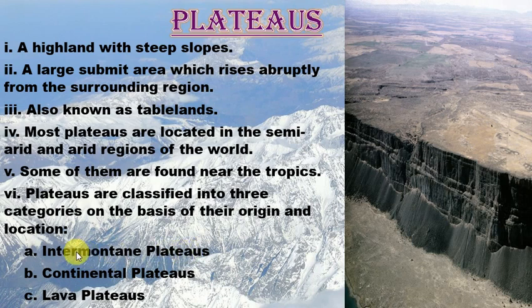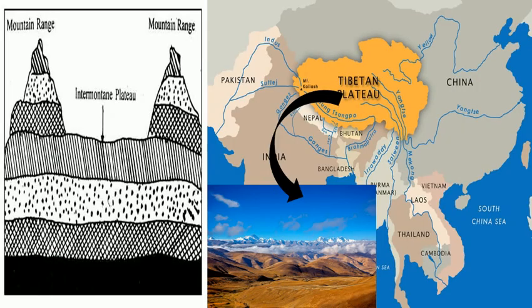Moving on to intermountain plateaus — as you can see in the slide, intermountain plateaus are the highest, largest, and the most complex in the world. They are partly or completely enclosed by mountains, as you can see the mountain ranges next to them. The most famous example is the Plateau of Tibet in Asia, which is the highest intermountain plateau in the world.